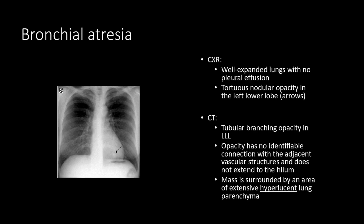Classic signs you should be looking for on CXR are the V-shaped mass and a localized area of hyperinflation visible distal to this mass, which is a representation of the mucocele. Bronchial atresia often flies under the radar because of its asymptomatic nature, but when you're reviewing imaging and see that distinct hyperinflation or mucoid impaction, this diagnosis should definitely be on your radar.